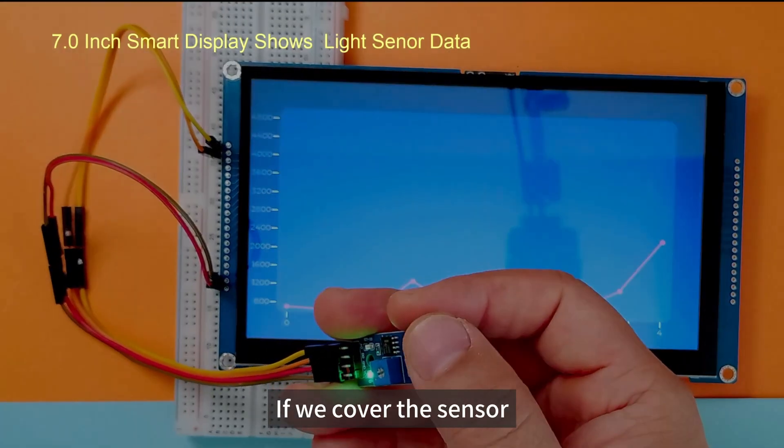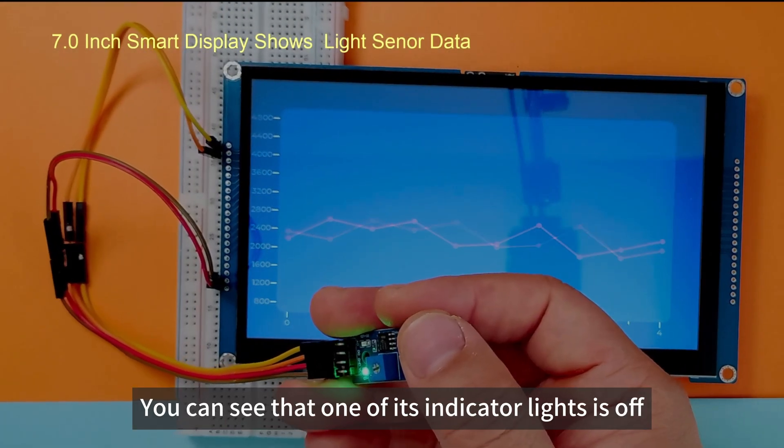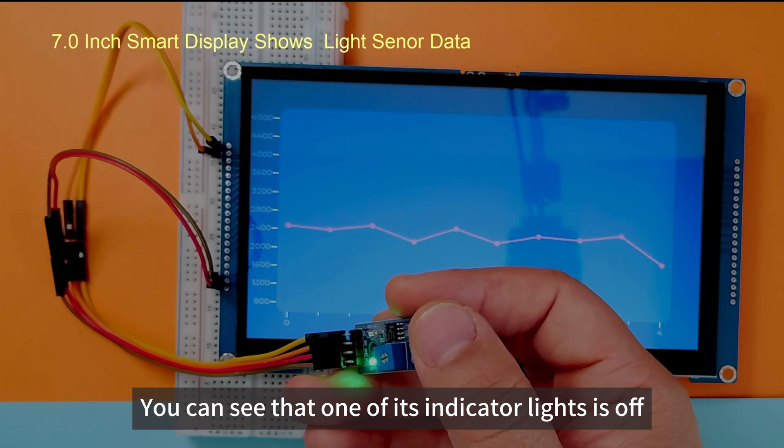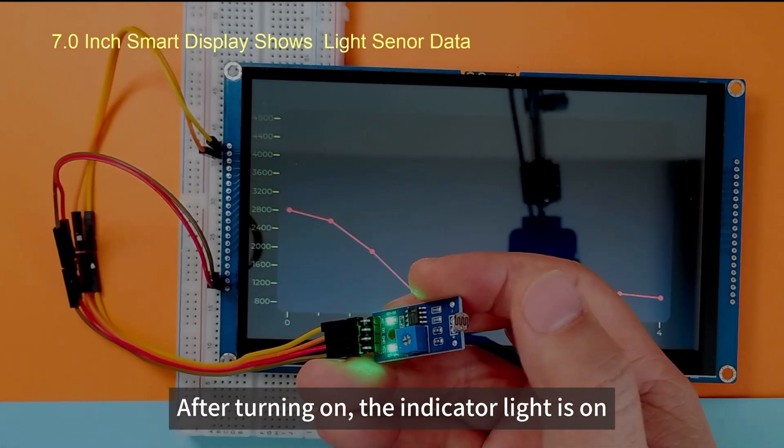If we cover the sensors, you can see that one of its indicator lights is off. After turning on, the indicator light is on.